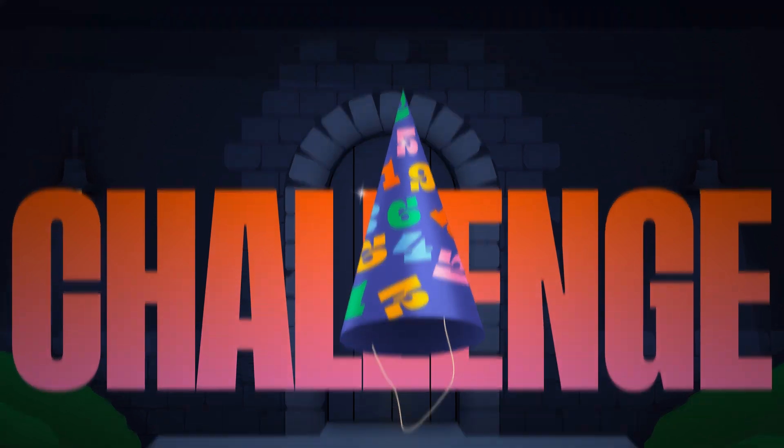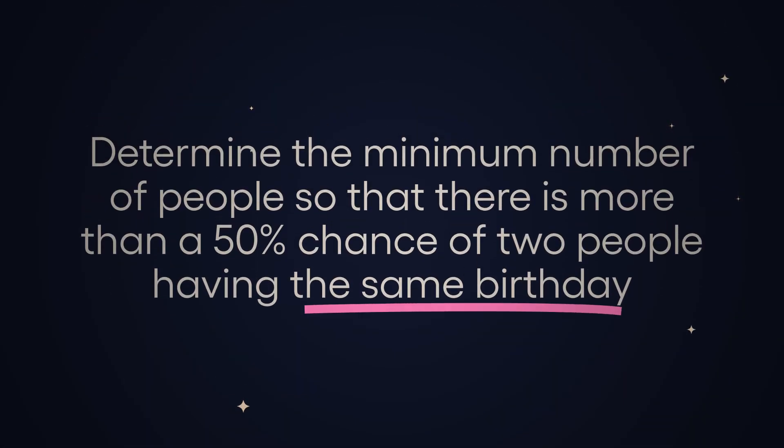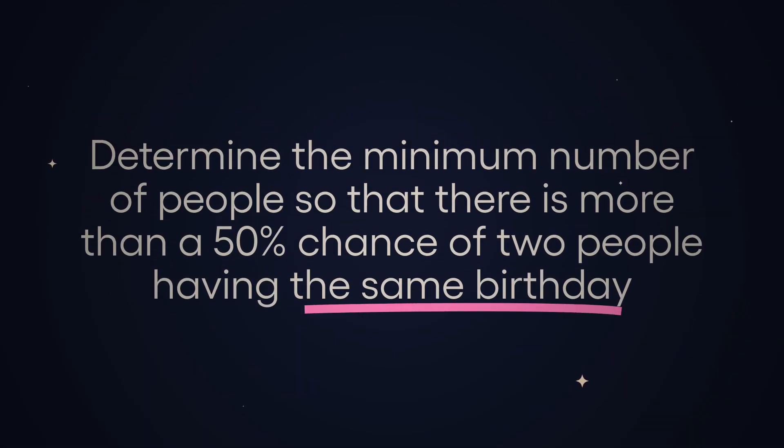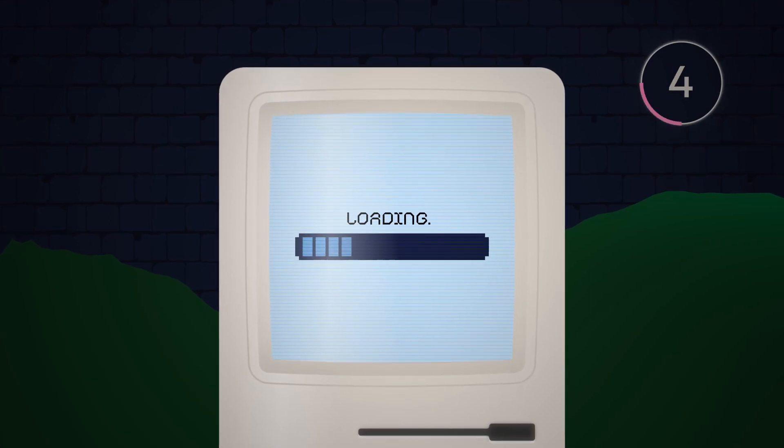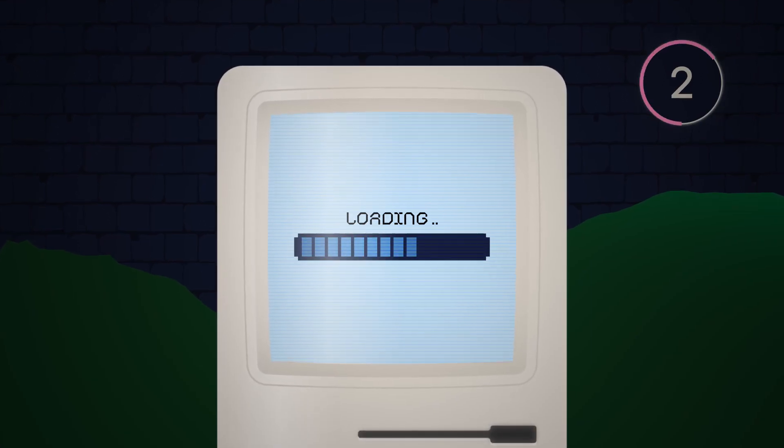How to determine the minimum number of people so that there is more than a 50% chance of two people having the same birthday, knowing that there are no twins and that no one was born on February 29th? You can pause to think about it or listen to the answer now.